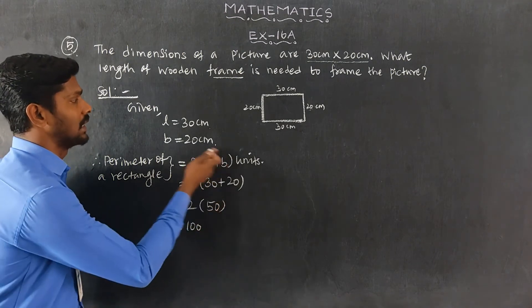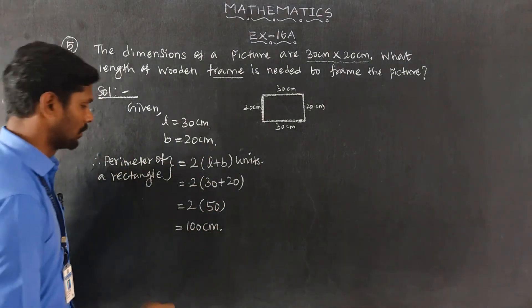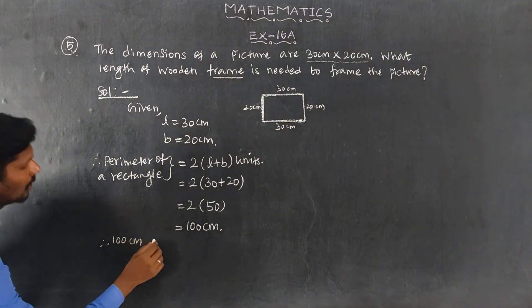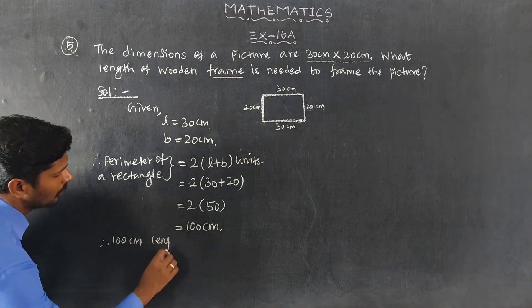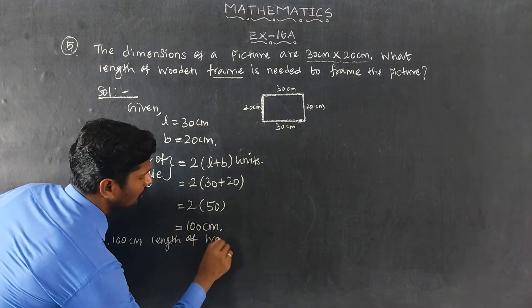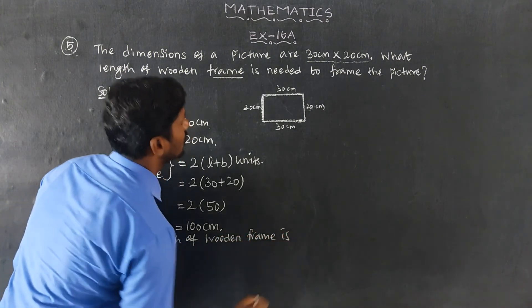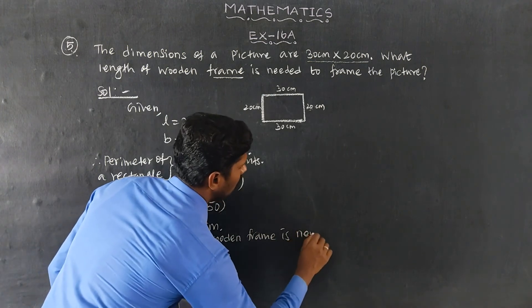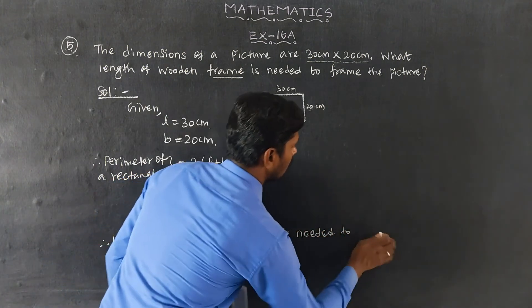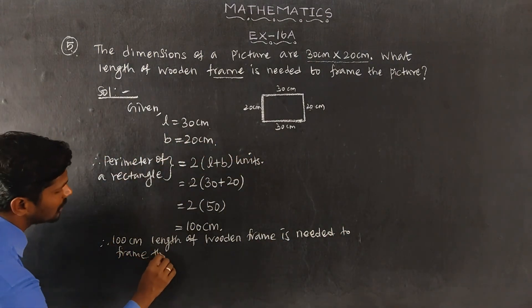100 units, that is 100cm. Therefore, 100cm length of wooden frame is needed to frame the picture.